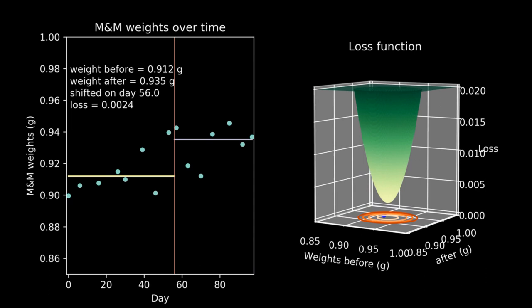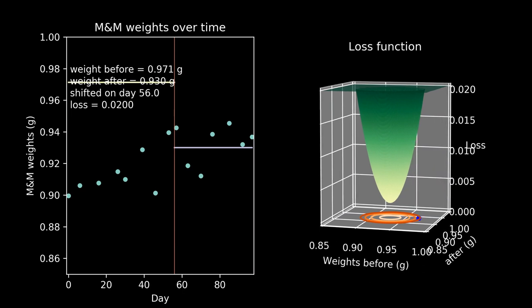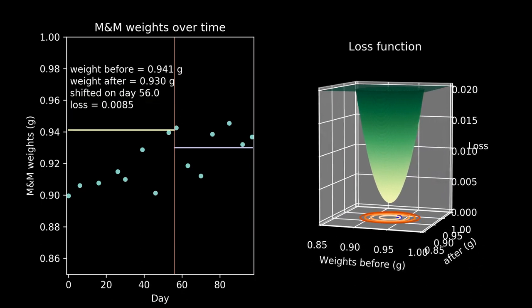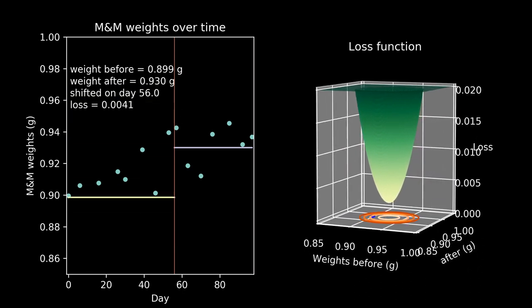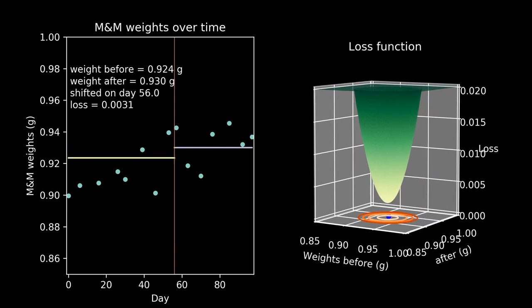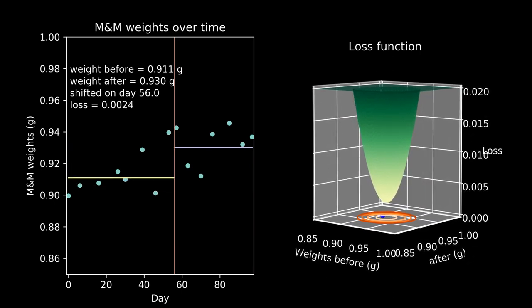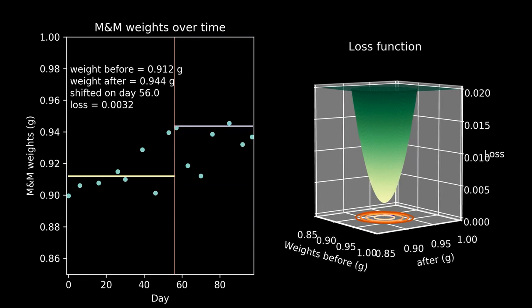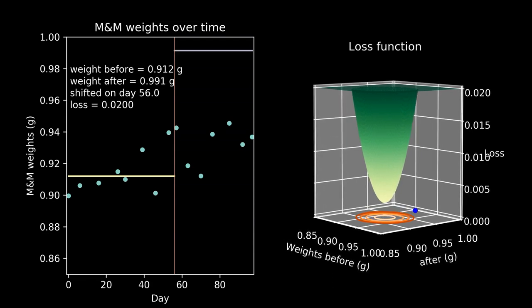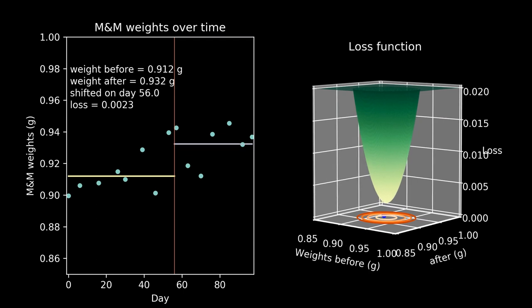In our case, we have fixed the day on which the equipment was swapped out and are varying the other two parameters — the weight of an M&M before the change and the weight after. The loss function helps us see what the best estimates are for these, at least if we assume this particular equipment shift day.